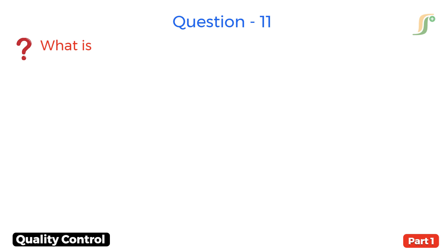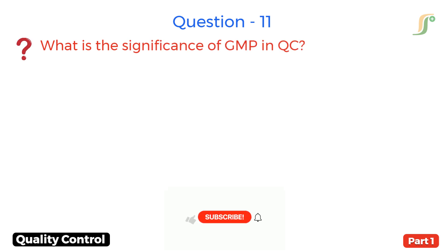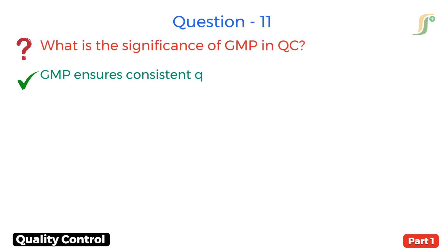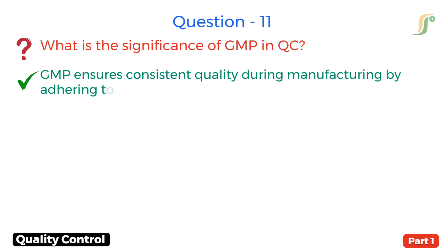Question 11. What is the significance of GMP in QC? Answer. GMP ensures consistent quality during manufacturing by adhering to approved processes and QC checks.